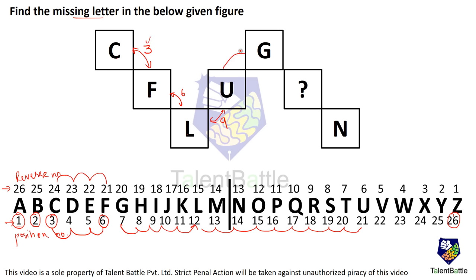So the next difference definitely has to be 9 more, bringing us 12 steps after U. After Z always comes A and before A always comes Z because it is cyclical. So after U I have to count 12.